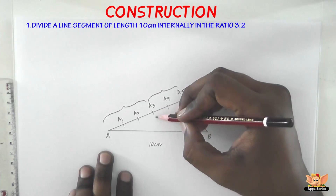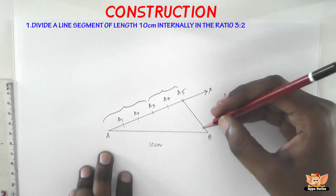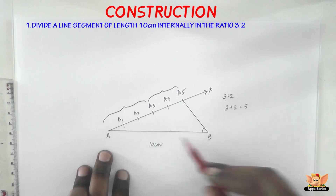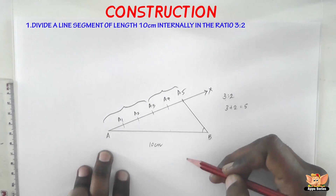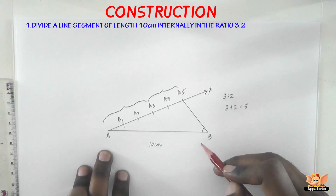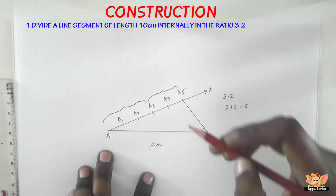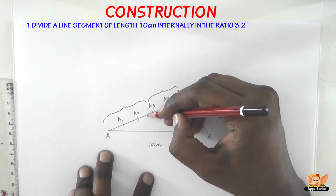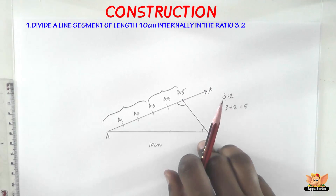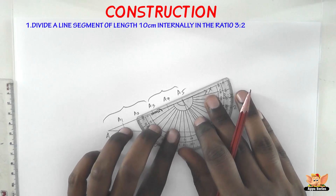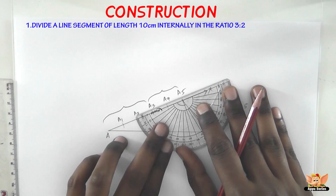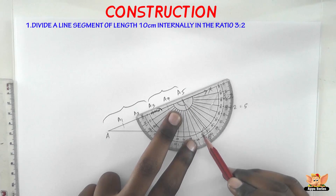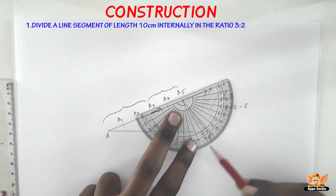Now how are we going to draw line A3C such that it's exactly parallel to BA5? All we need to do is measure the angle AA5B and draw a line from A3 at the same angle. So measure the angle AA5B and draw a line from A3 making that same angle. Keep the protractor at A5 exactly and measure it — it's obtuse, around 100 to 110 degrees.